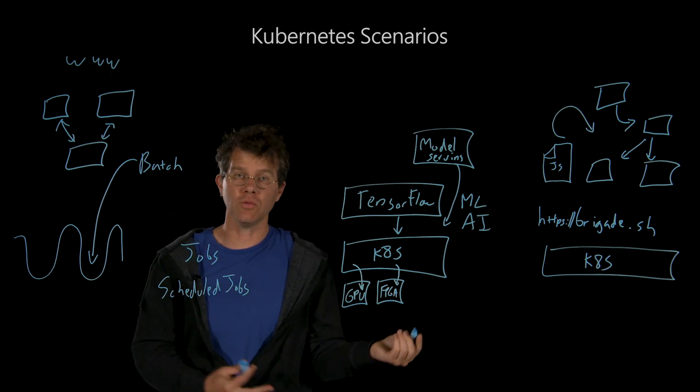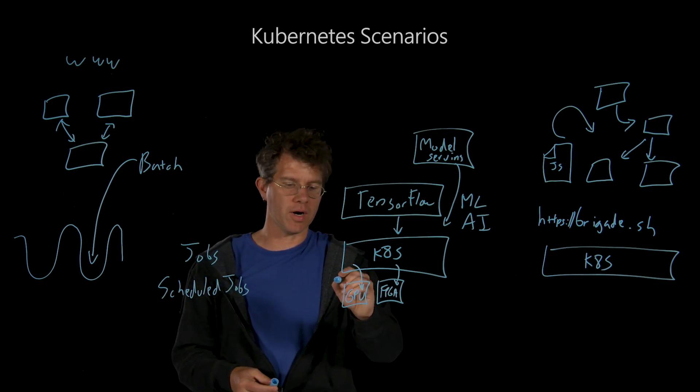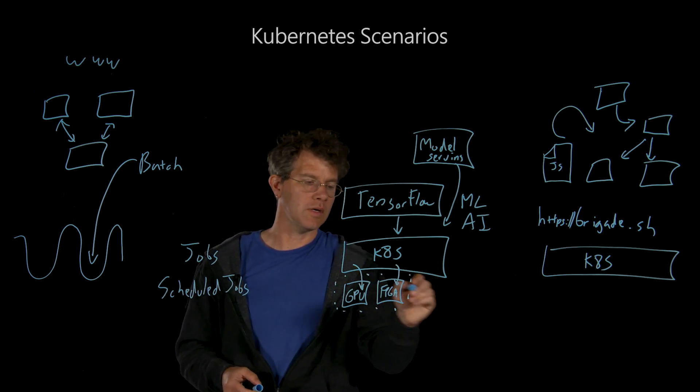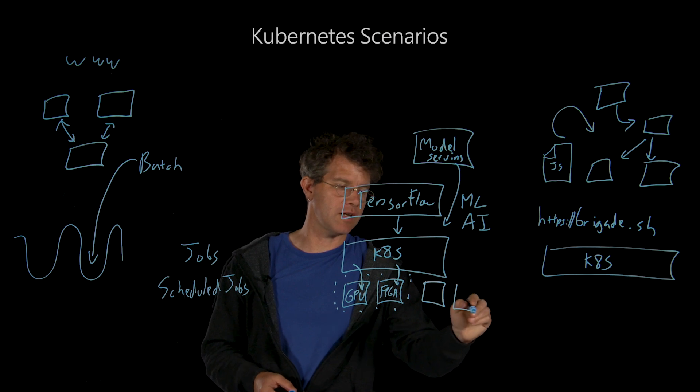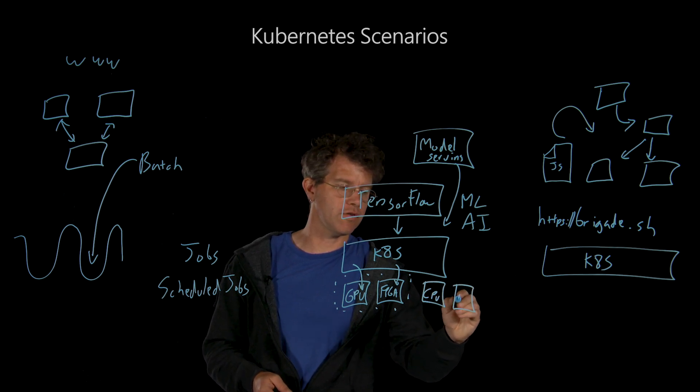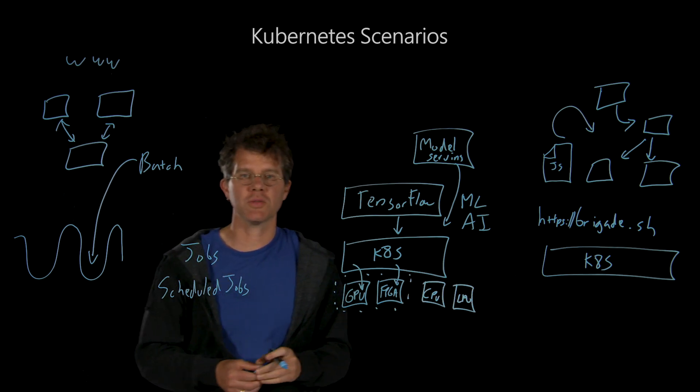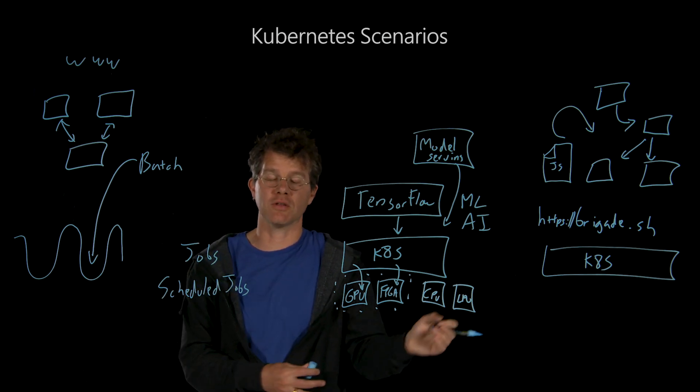Likewise, if you want to build a hybrid cluster, you can have part of your cluster dedicated to GPU and part dedicated to more traditional serving workloads. Kubernetes can be responsible for landing the right jobs in the right places.